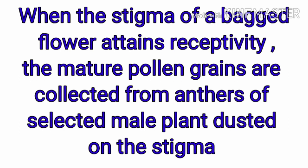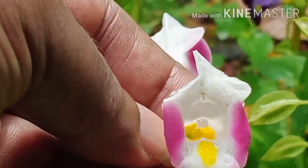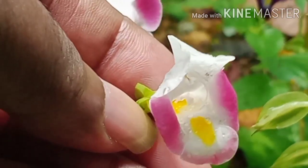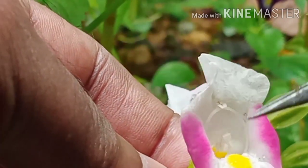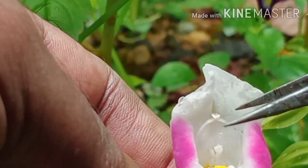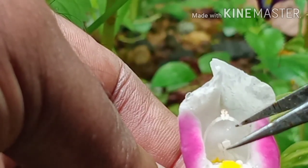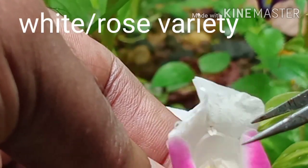When the stigma of the bagged flower attains receptivity, the mature pollen grains are collected from selected male flowers and dusted onto the stigma for artificial or controlled pollination.